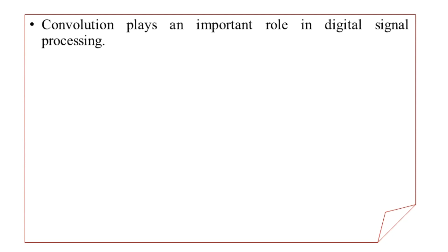Now there may be a question in your mind: why is convolution so important in digital signal processing? The answer is this: when we are provided with LTI systems — LTI standing for linear time invariant systems — and we have a certain input and require to know what output will be produced by this particular system, that is when the convolution operation is performed.